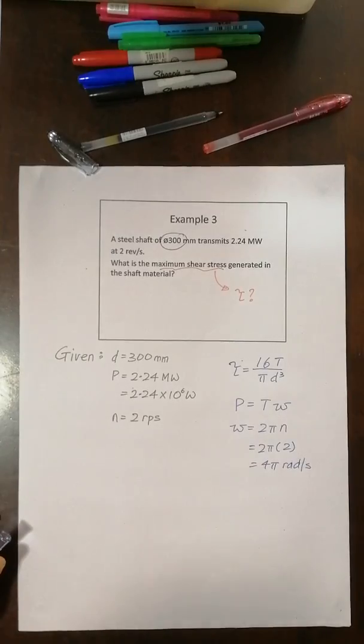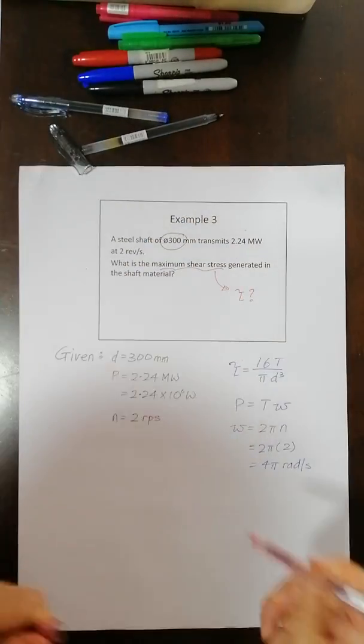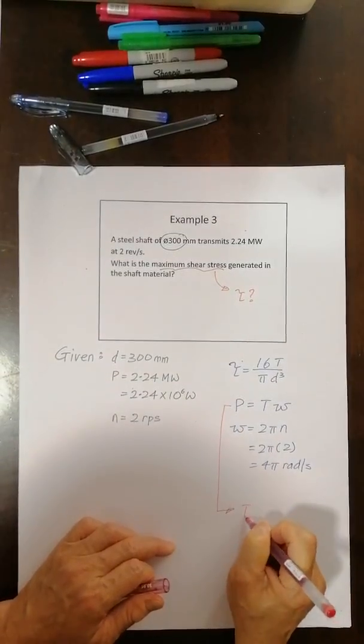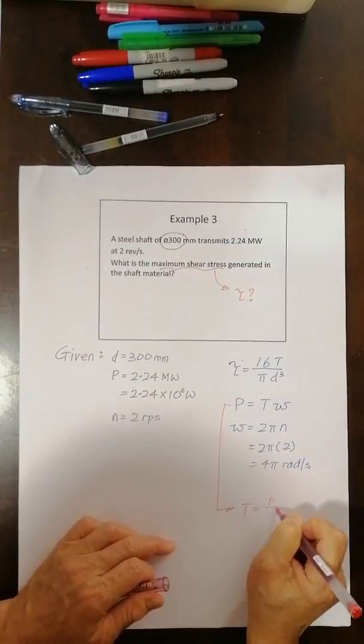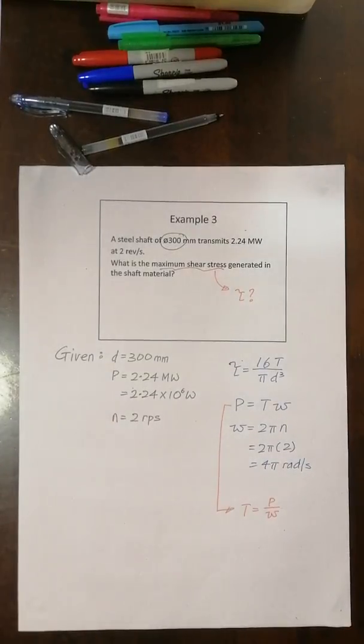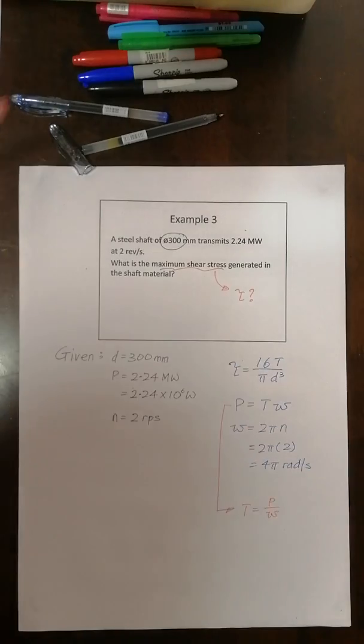Now with that, from this equation, from this equation, I can write T is equal to power over omega. So I can just now start to solve the equation already.